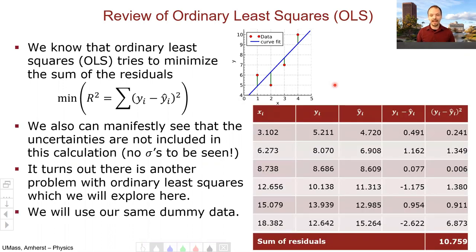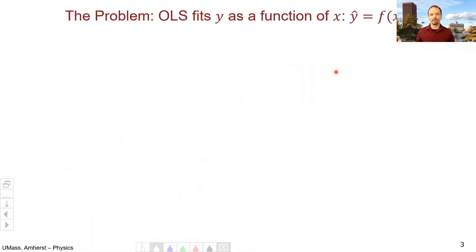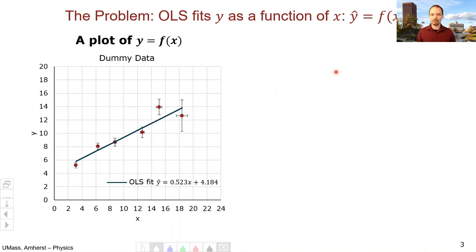We're going to use the same dummy data from the previous section — a table of made-up X's and Y's — to explore this other problem with least squares fitting. The problem is that least squares fits Y as a function of X. You might think that's what we want, but let's think about that more critically and explore the consequences.